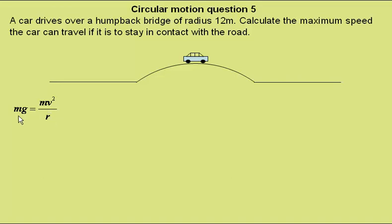We can cancel the mass of the car on either side to give this expression, then rearrange for the speed V as the square root of the acceleration due to gravity G times the radius of the circular motion R.